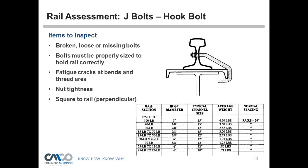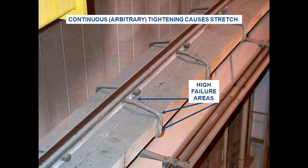During rail inspection, look for loose or missing J bolts and ensure they're properly sized to hold the rail. Check for cracks, fatigue cracks, bends, sweaty areas, nut tightness, and that the bolt is square and perpendicular to the rail. Tom notes the rail is allowed to float lengthwise but never side to side, and J bolts are subject to a lot of force. Don't arbitrarily tighten all J bolts — doing so can knock the rail out of alignment.